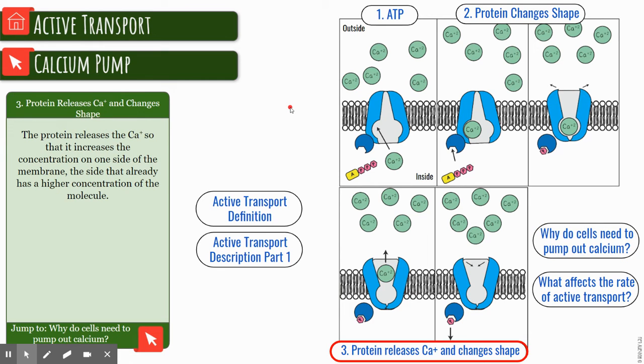You can see we've got the calcium goes in, then we've got the phosphate has been removed and this changes the shape of the protein.